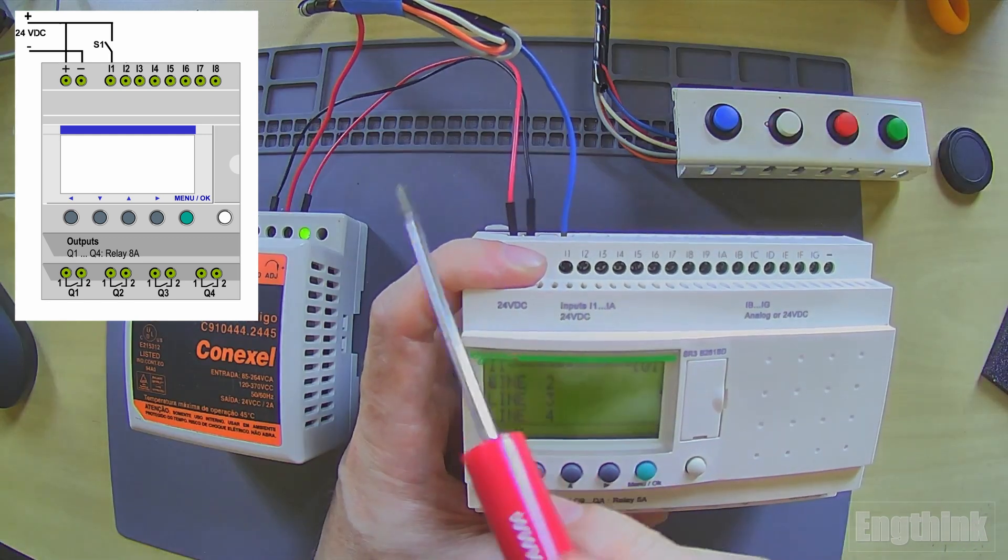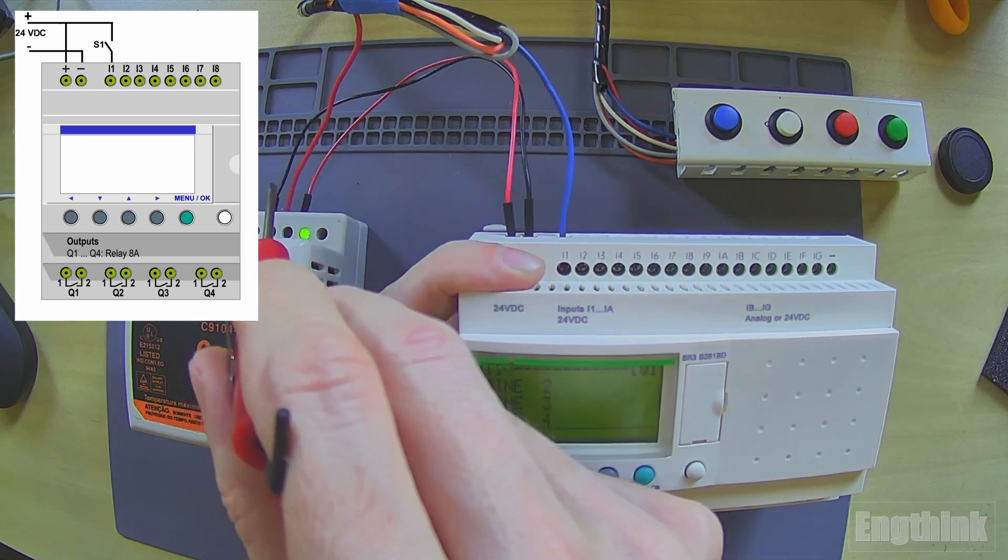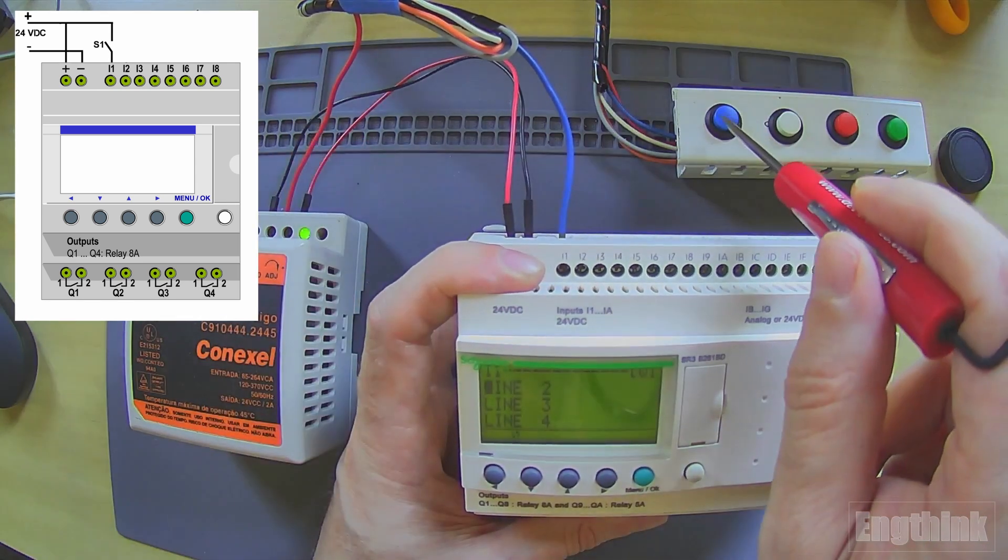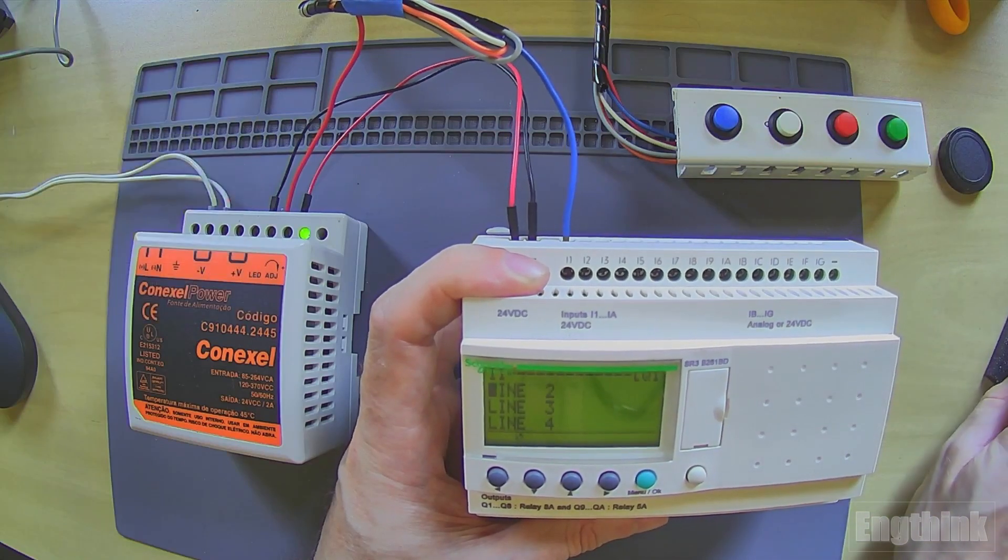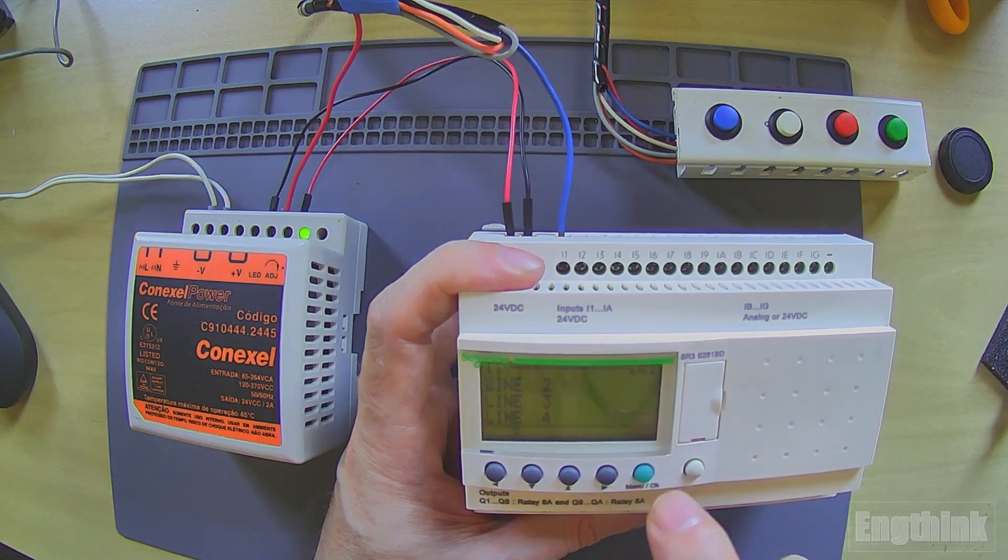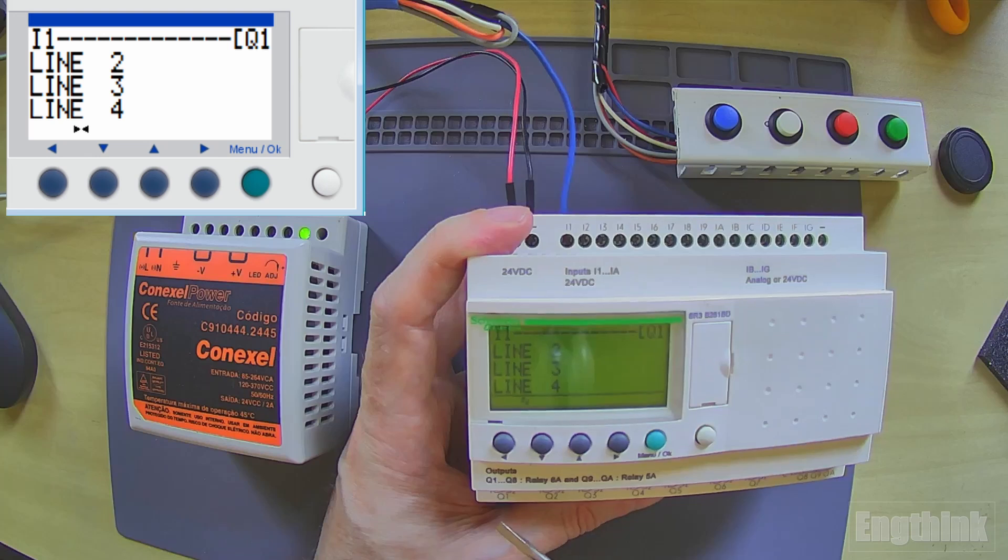We have this red wire connecting to the positive of the power supply, the 24 volts, then passing to the contact of this button and then going to I1. When I press I1, I have the activation of Q1, which is the first digital output here.